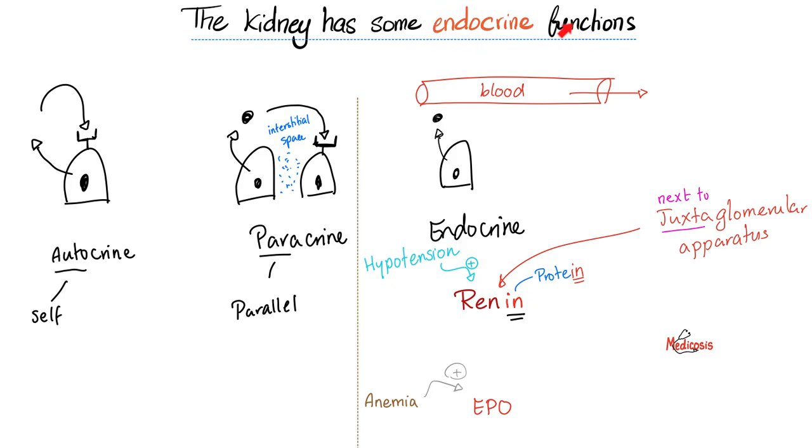The kidney has endocrine functions. We have EPO, we have 1,25-dihydroxyvitamin D, and we have renin. But what is the difference among autocrine, paracrine, and endocrine? If the cell secretes a substance to act on the same cell, this is autocrine. If the cell secretes a substance to act on the neighboring cells through the interstitial fluid, this is paracrine. But if the cell secretes something into the bloodstream, which will take this substance to distant locations all over your body, this is endocrine.